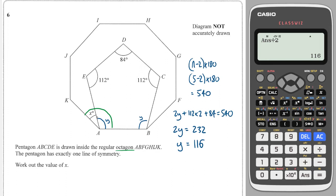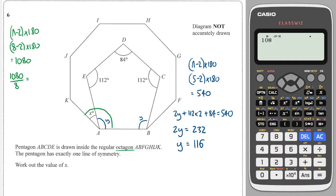I know that x and y together make up one interior angle of the larger octagon. So let's work out the interior angle of an octagon. Using (n − 2) × 180: 8 minus 2 is 6, times 180 gives 1080 total interior degrees. Dividing by 8 gives 135 degrees for one interior angle. So x plus y equals 135, meaning x equals 135 minus 116, which is 19.